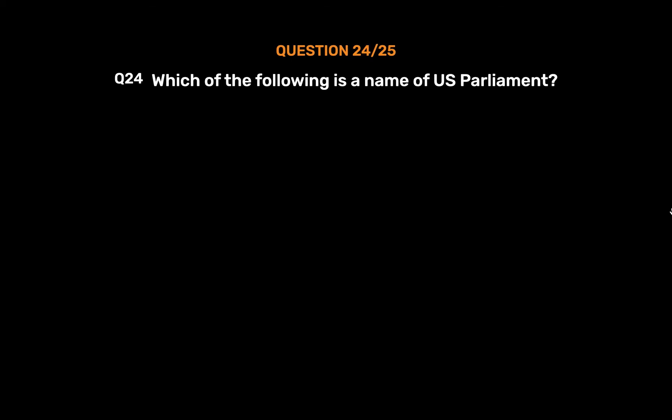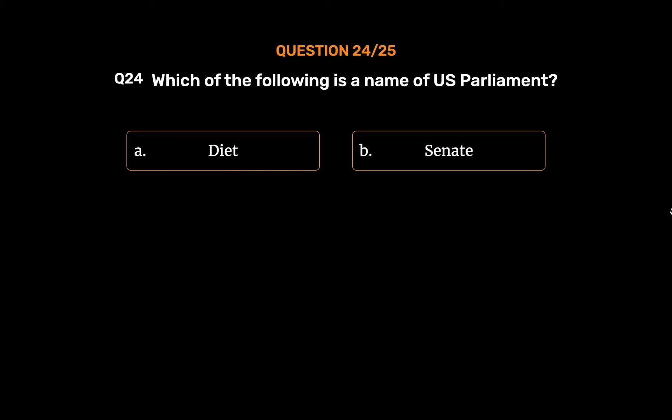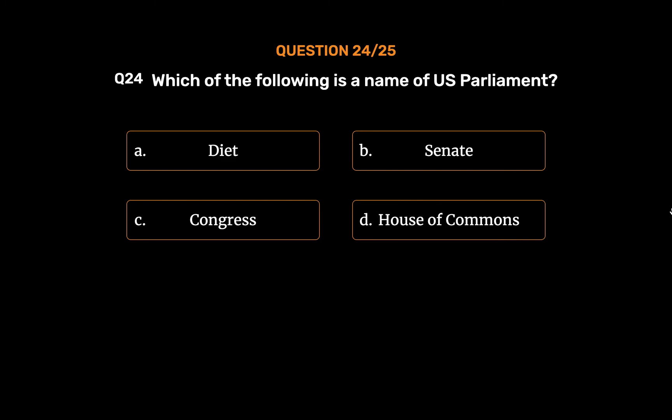Question No. 24. Which of the following is a name of US Parliament? Option A: Diet. Option B: Senate. Option C: Congress. Option D: House of Commons.